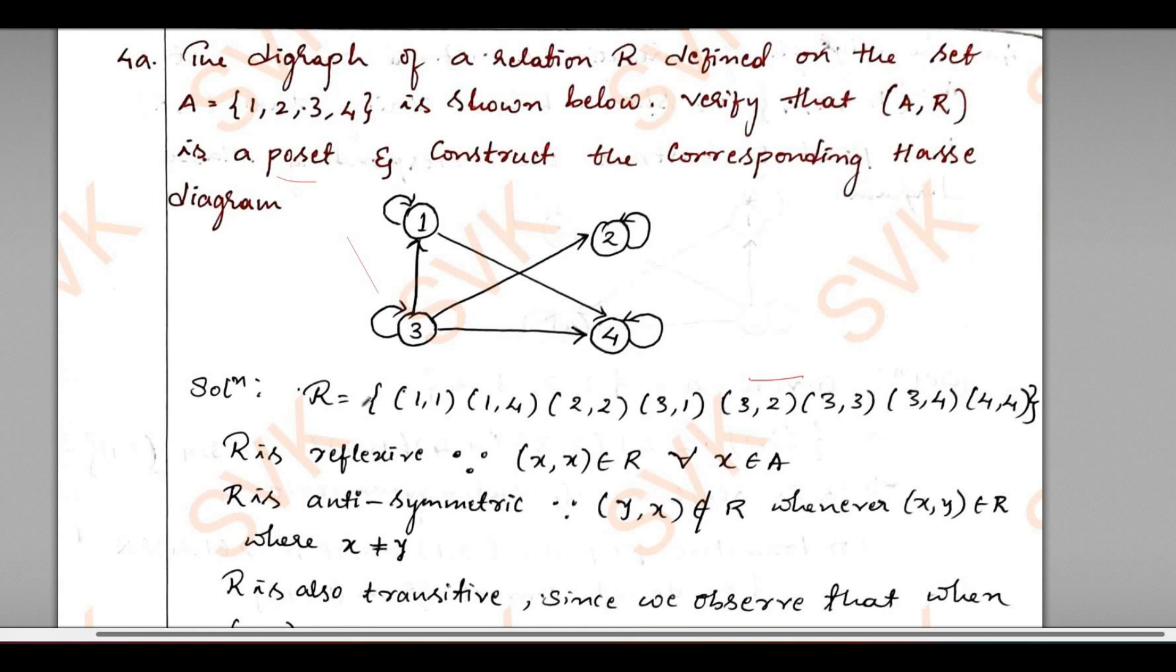Using this relation, I need to show that it is a POSET. As we have (1,1), (2,2), (3,3), (4,4), I can say that it is reflexive. R satisfies reflexive since it contains (x,x) belongs to R for all values of x, for all values of x belongs to A.